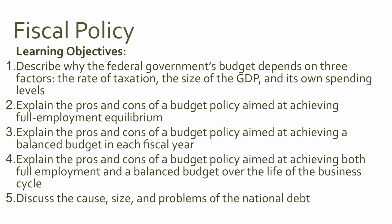Specifically, we're going to be looking at describing how the federal government's budget depends on three factors: the rate of taxation, the size of gross domestic product, and its own spending levels. We're going to explain the pros and cons of budget policy aimed at achieving full employment equilibrium, a balanced budget in the fiscal year, and both full employment and a balanced budget over the life of the business cycle. We're also going to discuss the cause, size, and problems of the national debt.